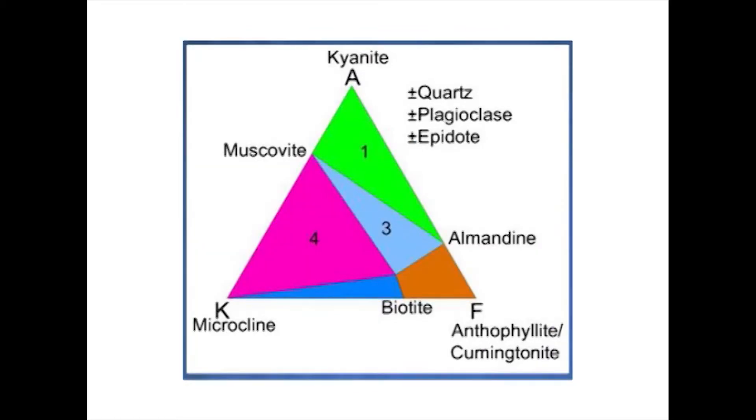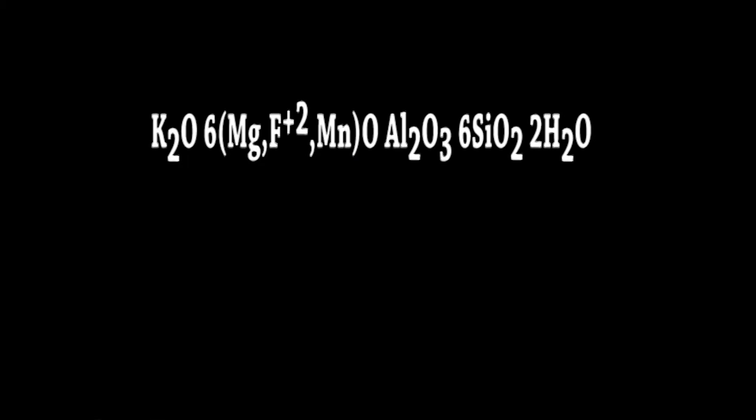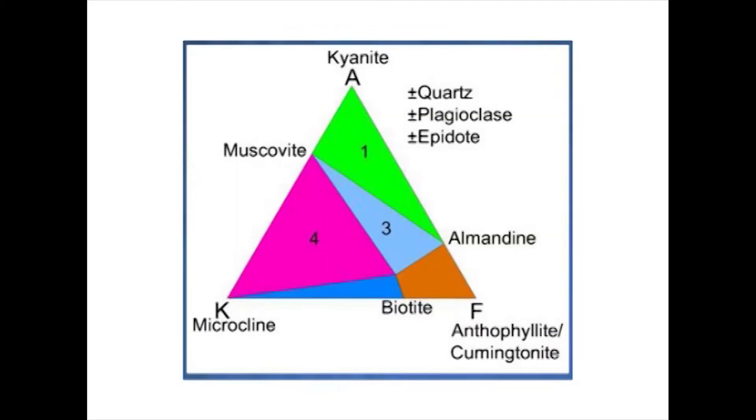Biotite has a variable composition and is represented by a field. The ideal composition of Biotite is K2O · 6(Mg,Fe,Mn)O · Al2O3 · 6SiO2 · 2H2O. This composition corresponds to a point on the K and F side of the diagram, with 14 molecular percent Potash and 86 percent Iron.